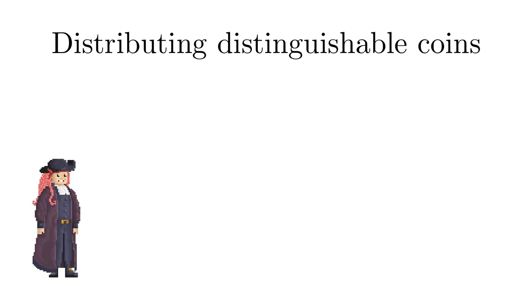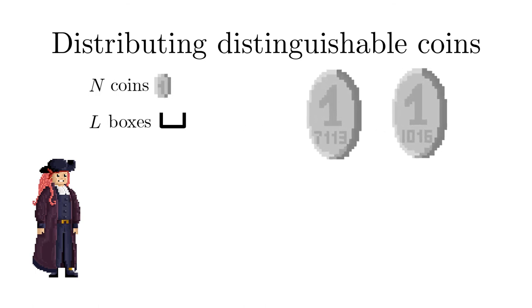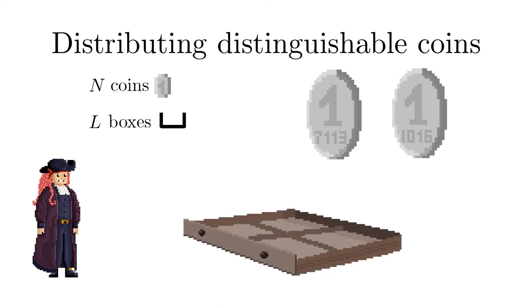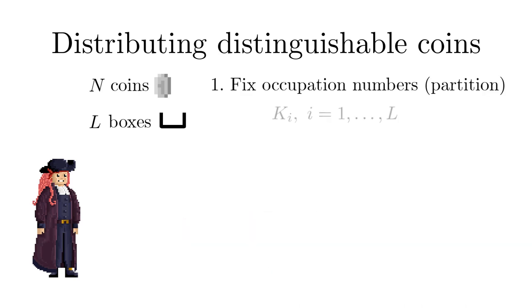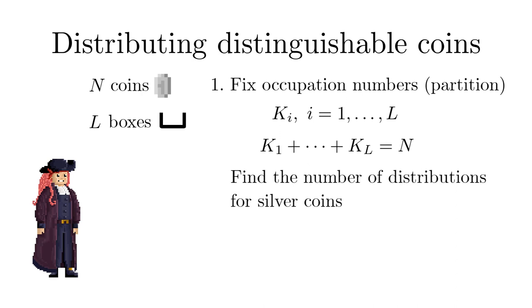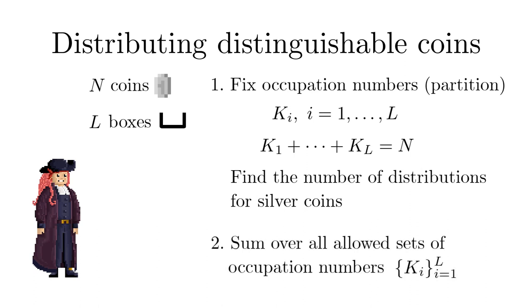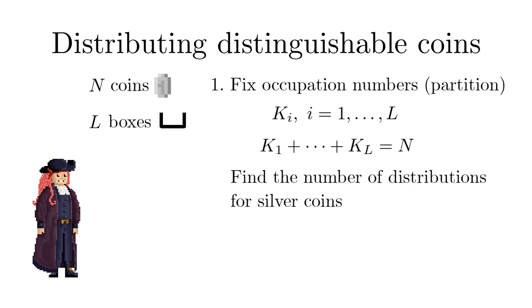Captain Base was pondering about the number of distributions of N silver coins in L boxes where silver coins have a serial number that makes them distinguishable and the boxes are big enough to hold any number of coins. In contrast to the copper coin problem it now makes a difference whether the silver coin with a certain serial number falls into box I or J. Within a box however the ordering is irrelevant. The problem can be split into two parts. First consider a set of occupation numbers K sub I such that they add up to the total number of coins and determine the number of silver coin distributions compatible to the occupation numbers. Second sum over all allowed sets of occupation numbers.